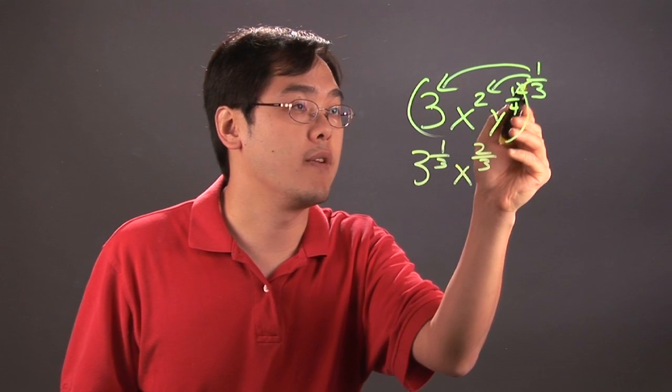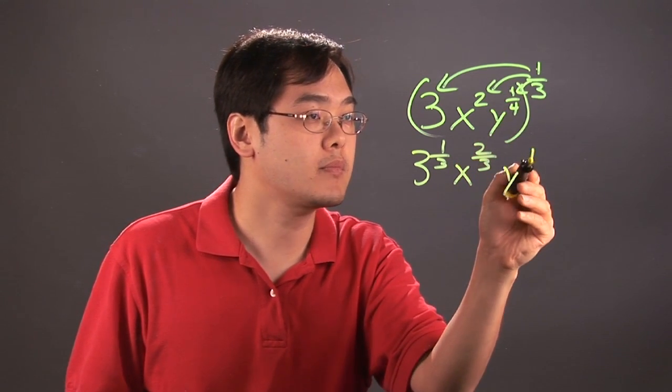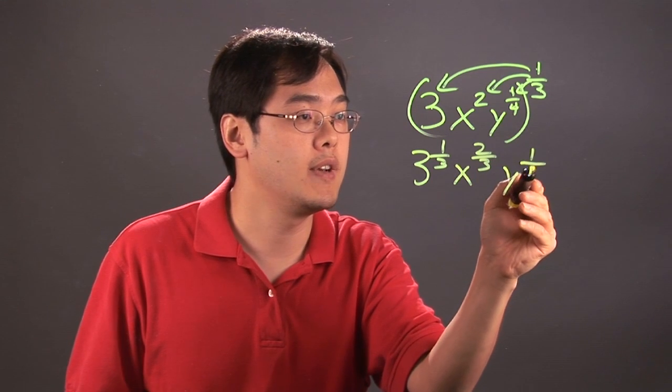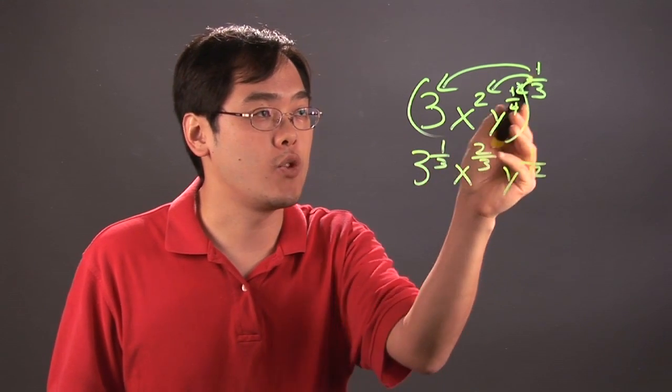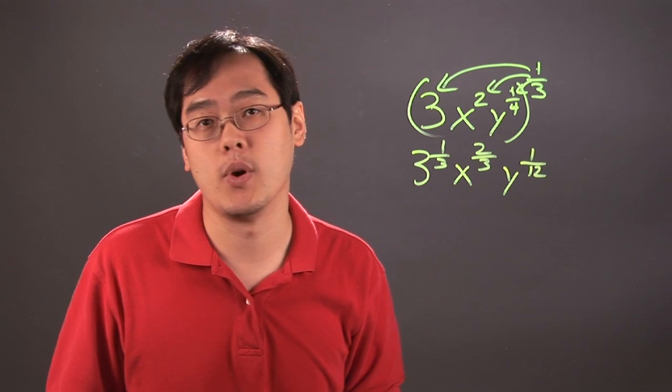And then y to the one-fourth to the one-third, you multiply: 1 times 1 is 1, 4 times 3 is going to be 12. So, this expression raised to the one-third power is 3 to the one-third, x to the two-thirds, and y to the one-twelfth power.